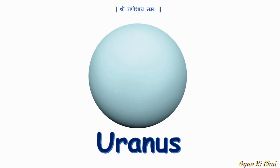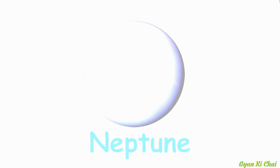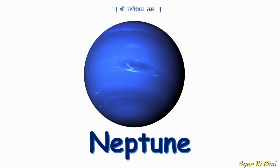The seventh planet from the sun is Uranus. The eighth planet from the sun is Neptune.